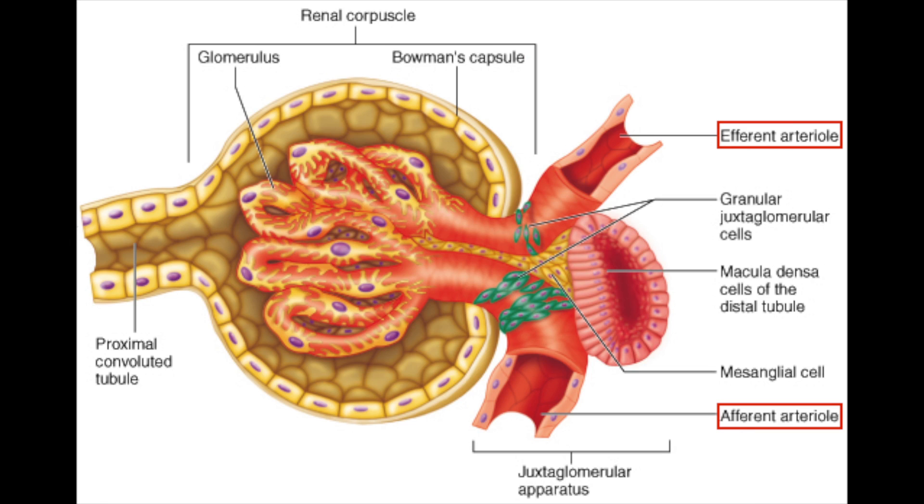At the vascular pole, we can see afferent and efferent arterioles, though they are difficult to distinguish and not readily seen. Blood enters the glomerulus through the afferent arteriole and exits through the efferent arteriole, which then goes on to supply the tubules of the nephron.